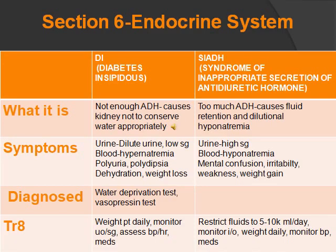Here are more disorders of the pituitary gland. We're going to compare and contrast DI with SIADH. DI stands for diabetes insipidus, and SIADH stands for syndrome of inappropriate secretion of antidiuretic hormone. We're talking about the antidiuretic hormone, also called vasopressin, which causes fluid retention. DI is not enough ADH, so it causes the opposite — peeing and a lot of fluid loss, causing the kidney not to conserve water appropriately. SIADH has too much ADH, causing fluid retention and hyponatremia.